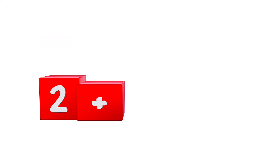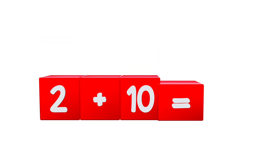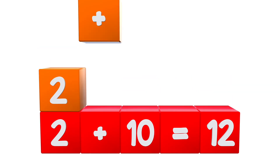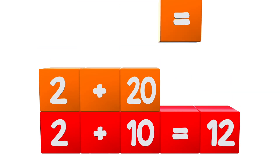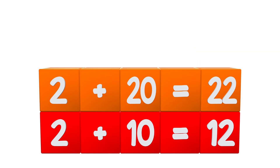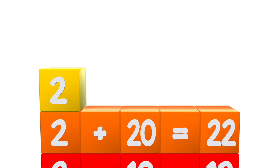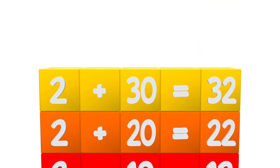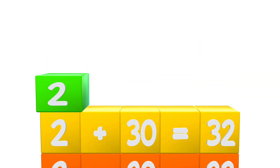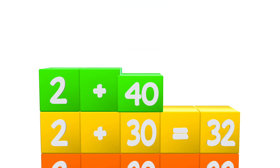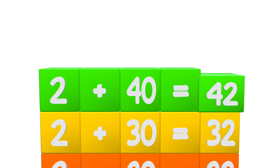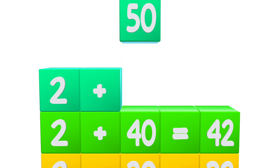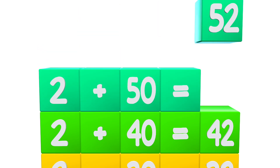2 plus 10 equals 12. 2 plus 20 equals 22. 2 plus 30 equals 32. 2 plus 40 equals 42. 2 plus 50 equals 52.